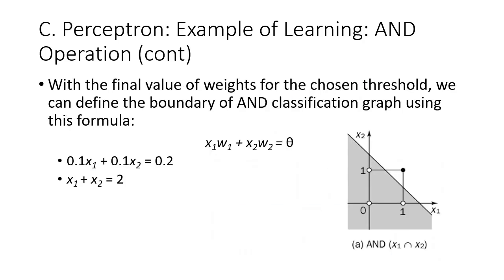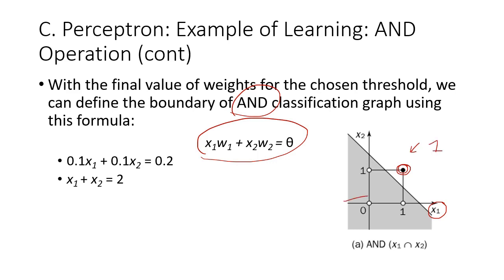Once all the final values of weights have been updated, we can define the boundary of AND classification using this formula. If input 1 is 1 and input 2 is 1, this is the only situation where the output would be 1; all other cases fall where the output is 0. This is the graph for the AND truth table.